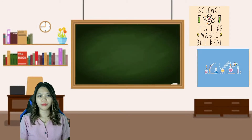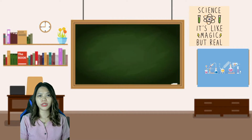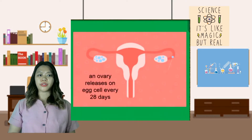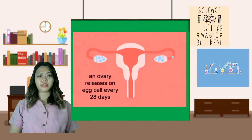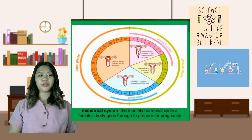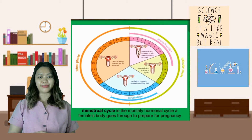Hello students, welcome to grade 10 science lesson. I am your teacher, Ma'am Angela Chodoro. You have learned from your elementary science lesson that an average female ovary releases one egg every 28 days. These hormones control the monthly changes happening in the female reproductive system, also known as the menstrual cycle. Let's find out more about the menstrual cycle in today's lesson.